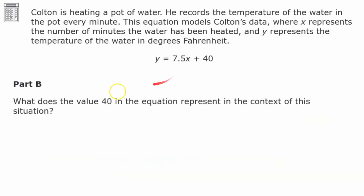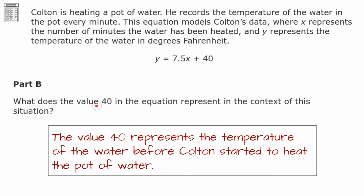Part B: What does the value 40 in the equation represent in the context of this situation? The value 40 represents the temperature of the water before Colton started to heat the pot — it is the initial temperature of the water before he turned on the heat.